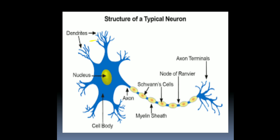The dendron or dendrites receive the message. The cyton interprets the message — deciding what action has to be taken. The axon transmits the message. The dendrite structure is tree-like; in fact, 'dendron' means wood or tree. The fine branches of the dendron are known as dendrites.